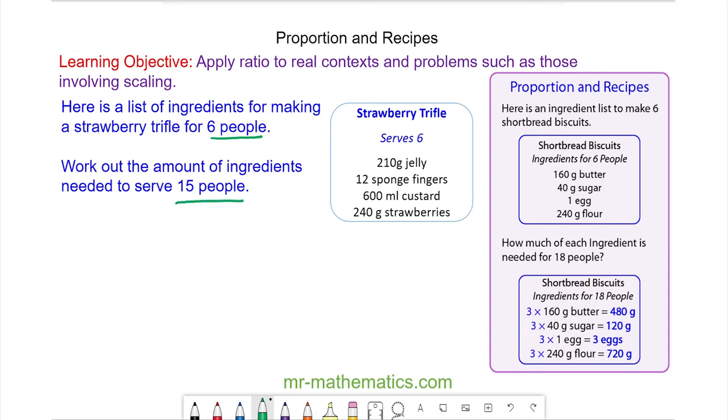To begin, I'm going to write each ingredient as a ratio. We have jelly, sponge fingers, custard, and strawberries. For six people we need 210 grams jelly, 12 sponge fingers, 600 milliliters of custard, and 240 grams of strawberries.